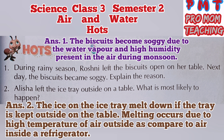Higher Order Thinking question 1: During rainy season, Roshni left the biscuits open on her table. Next day the biscuits became soggy. Explain the reason. Answer: the biscuits became soggy due to the water vapor and high humidity present in the air during monsoon.